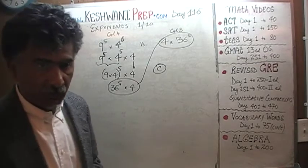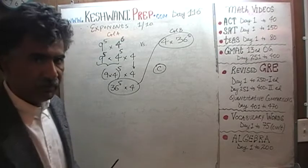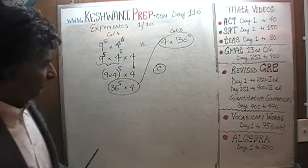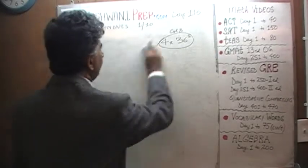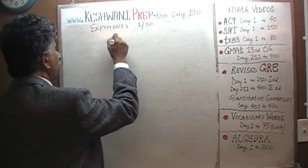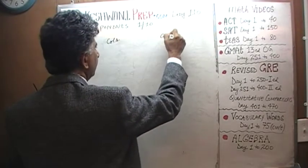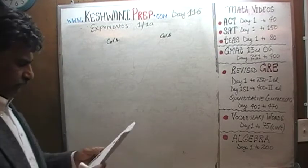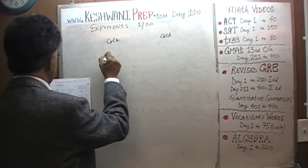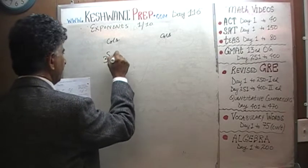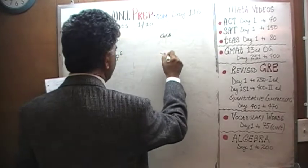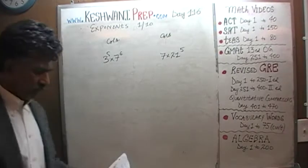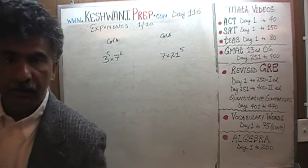Let's do one more, shall we? Again, as soon as I put the problem on the blackboard, I want you to pause the video and do it yourself. Here is the next one. Same exact scenario. Column A, column B. In the first column we have 3 raised to 5 times 7 raised to 6 versus 7 times 21 raised to 5. Alright, do it yourself and then we will do it together in a few seconds time.